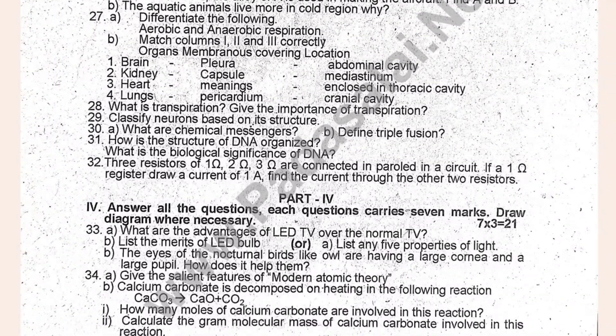3 resistors of 1 ohm, 2 ohm, and 3 ohm are all connected in parallel in a circuit of 1 ohm. If a 1 ohm resistor draws a current of 1A, find the current through the other 2 resistors.